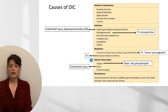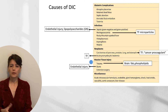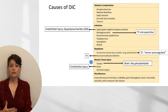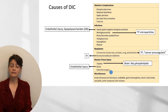Massive tissue injury is also a stimulus for DIC. When we think of trauma, you particularly want to consider brain trauma because of the potential release of fats and phospholipids into the circulation. Burns can also cause DIC through massive endothelial injury, and don't forget that surgery is, in fact, a type of trauma — so extensive surgery is also a potential cause of DIC.